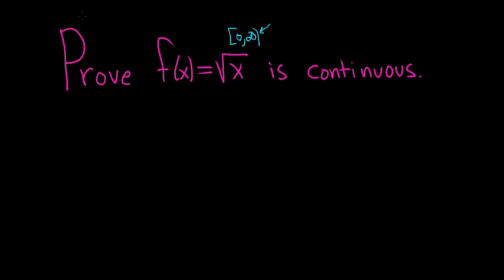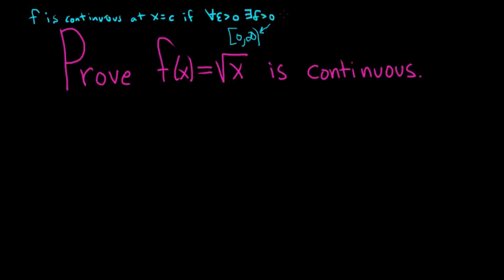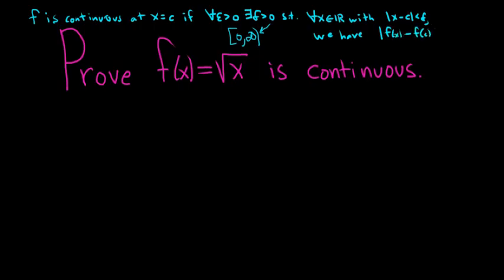Before we do the proof, recall the definition of what it means for a function to be continuous at a number. We say f is continuous at x equals c if for all epsilon greater than 0 we can find some delta greater than 0 such that for every real number x with the property that the distance between x and c is less than delta, we have the distance between f of x and f of c less than epsilon.